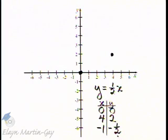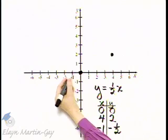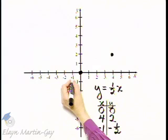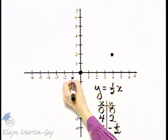Now let's plot this ordered pair. Start at the origin, we move one to the left because it's negative, from there one-half unit down because that's negative.